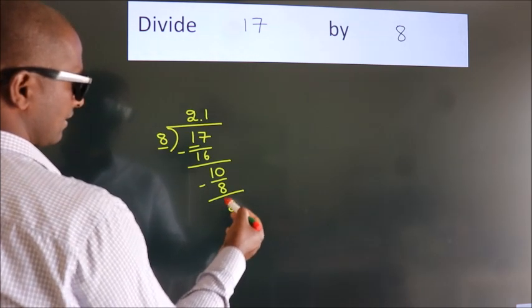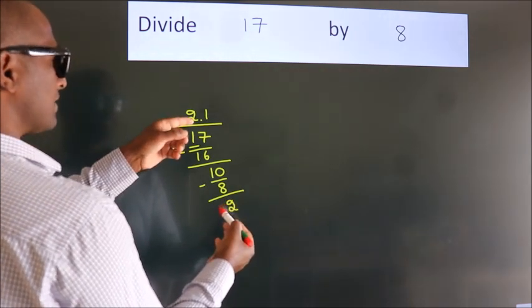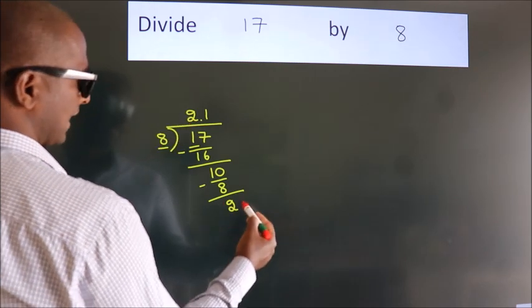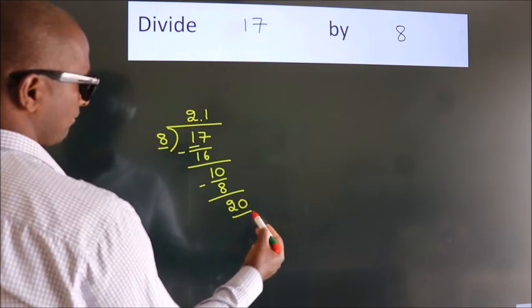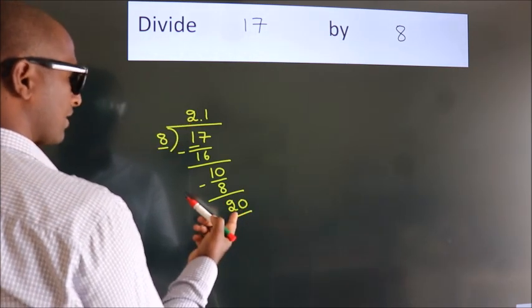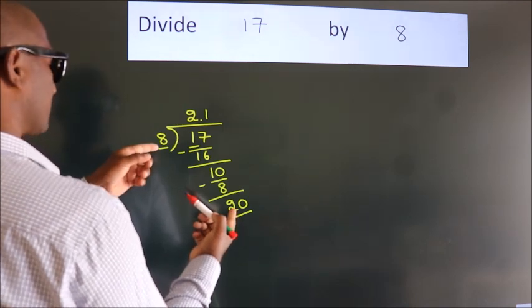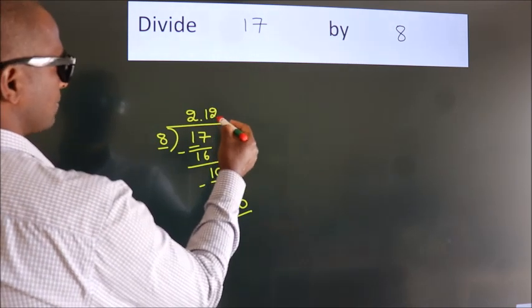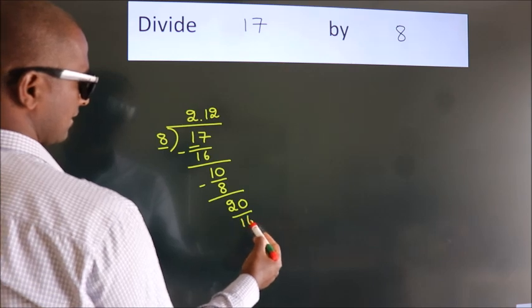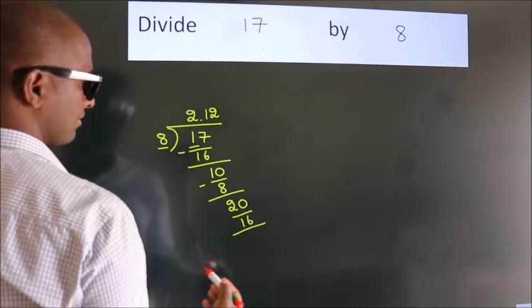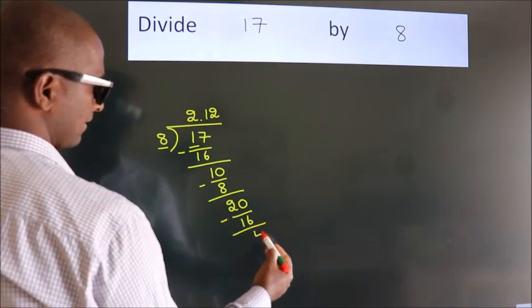After this, we already have the decimal, so directly take 0. So 20. A number close to 20 in the 8 table is 8 twos, 16. Now we subtract. We get 4.